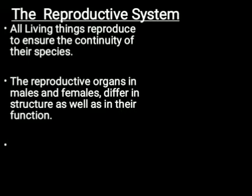In a similar way, animals also produce babies which grow and develop into adults. An adult human being again produces a baby. For example, a cat gives birth to kittens, a dog gives birth to puppies, and human beings give birth to babies. So why do all living things reproduce?